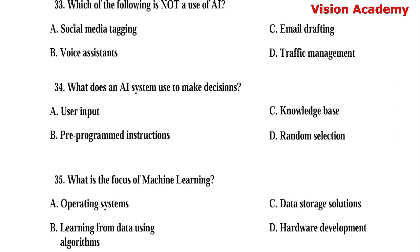Question number 33. Which of the following is not a use of AI? Option A: Social media tagging. Option B: Voice assistance. Option C: Email drafting. Option D: Traffic management. Here, option C, email drafting, is the right answer.